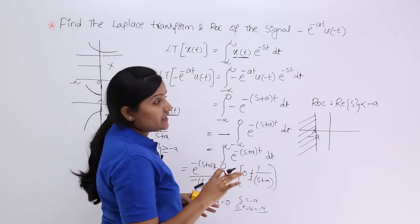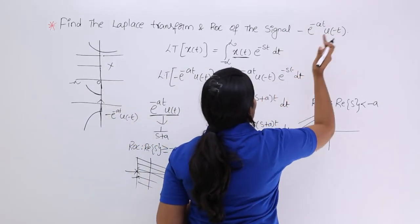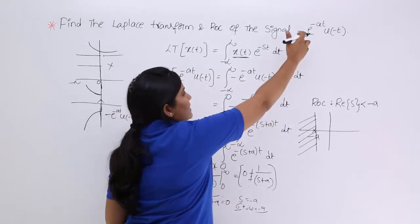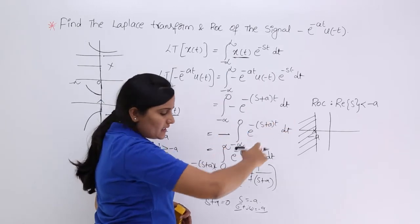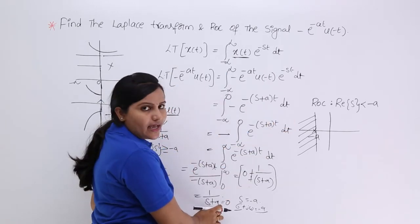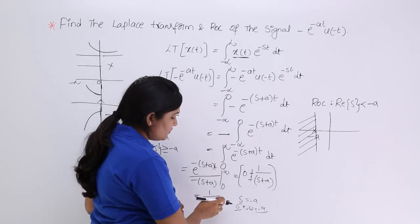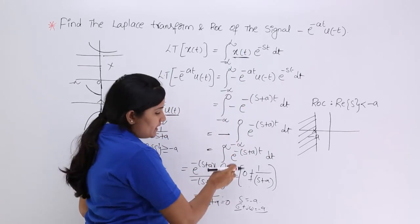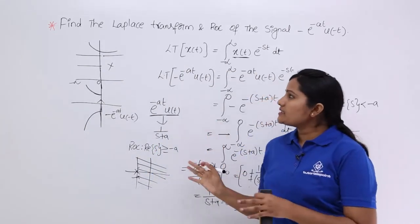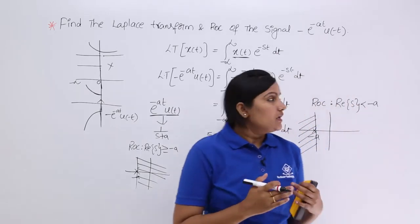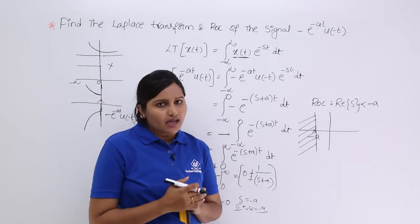Sometimes they will ask for the Laplace transform of e power minus at u(minus t) without the leading minus sign. In that case, you put the minus on the transform: minus 1 by (s plus a). When the signal is given with the minus, the transform is simply 1 by (s plus a). This concludes the discussion on the Laplace transform of a left-sided decaying exponential.